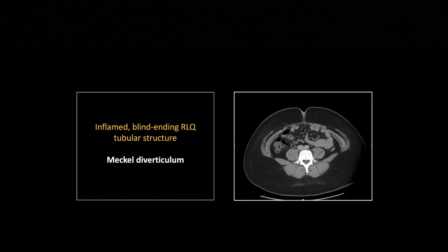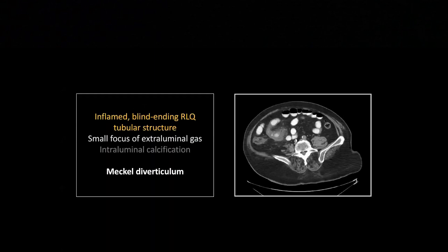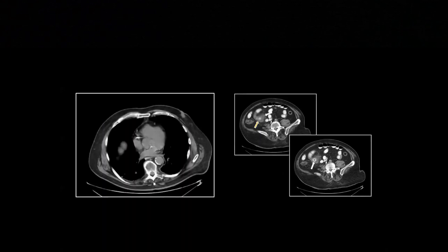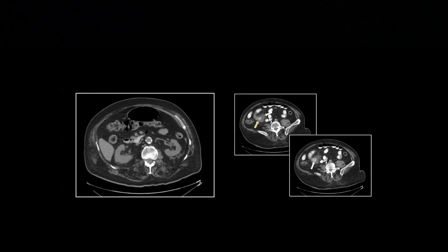So that is a Meckel's diverticulum diverticulitis. Meckel's diverticula can form stones just like an appendix could, and ultimately they can become so inflamed that they perforate. That's what this is — there is the thick-walled, inflamed, blind-ending structure, even more obvious because it's more in the transverse plane. There's a little dot of gas there which may or may not be extraluminal, the wall is so fuzzy and inflamed. On the next lower cut, you can see that it definitely is.